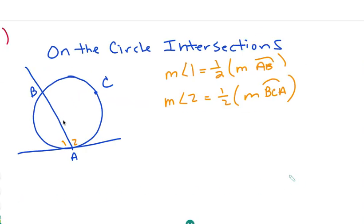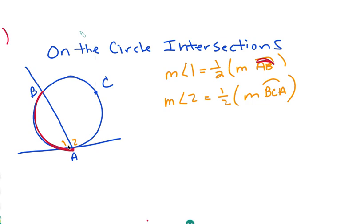Now we can also have an angle created by intersecting lines where the vertex is on the circle — on the tangent. When the vertex sits on the circle, the formula is that the angle equals half of its intercepted arc. So angle 1 is half of arc AB. For angle 2, I look at the major arc BAC, or ACB, and take half of it.